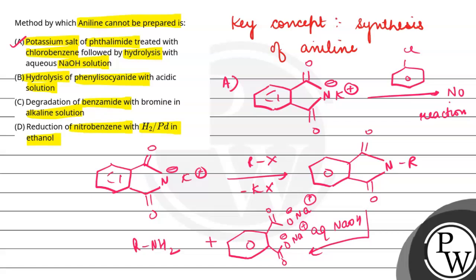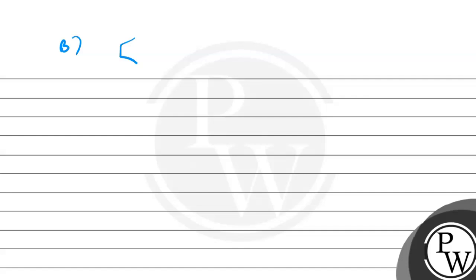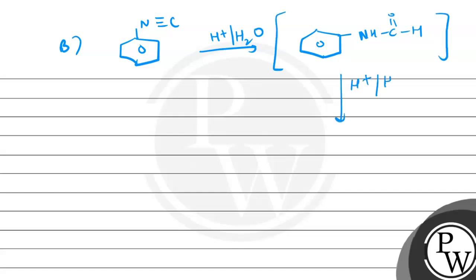We have the correct answer that is option A. This method we will not be able to use. Now we'll see the rest of the methods. We will use phenyl isocyanide with acidic solution. So we can create aniline. This is phenyl isocyanide. With acid hydrolysis, we get phenyl formamide. When we use phenyl formamide plus formic acid, by this method we can synthesize aniline.